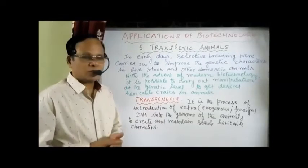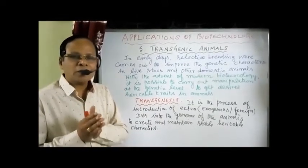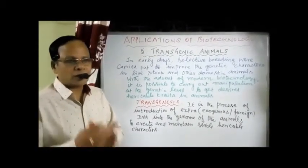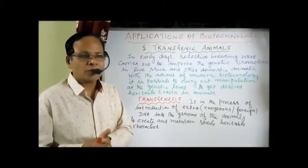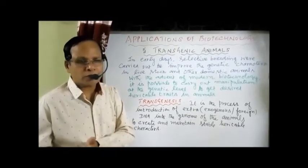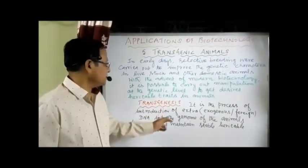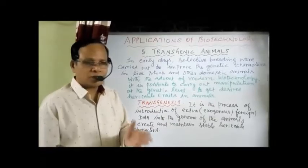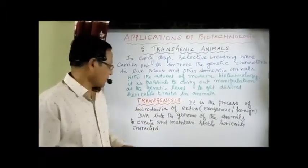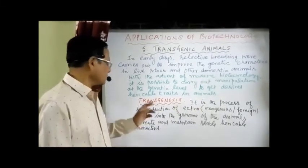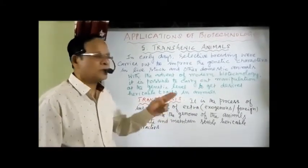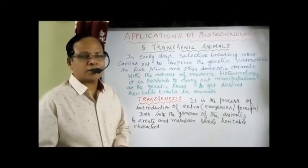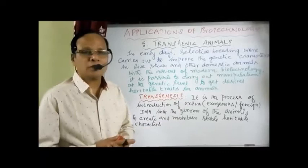What is transgenesis? Transgenesis is the process of introduction of extra, exogenous — that is foreign — DNA into the genome of the animals, to create and maintain stable, heritable characters. The desired genetic characters which cannot be changed — that is why the word stable heritable character is used. That process is called transgenesis.